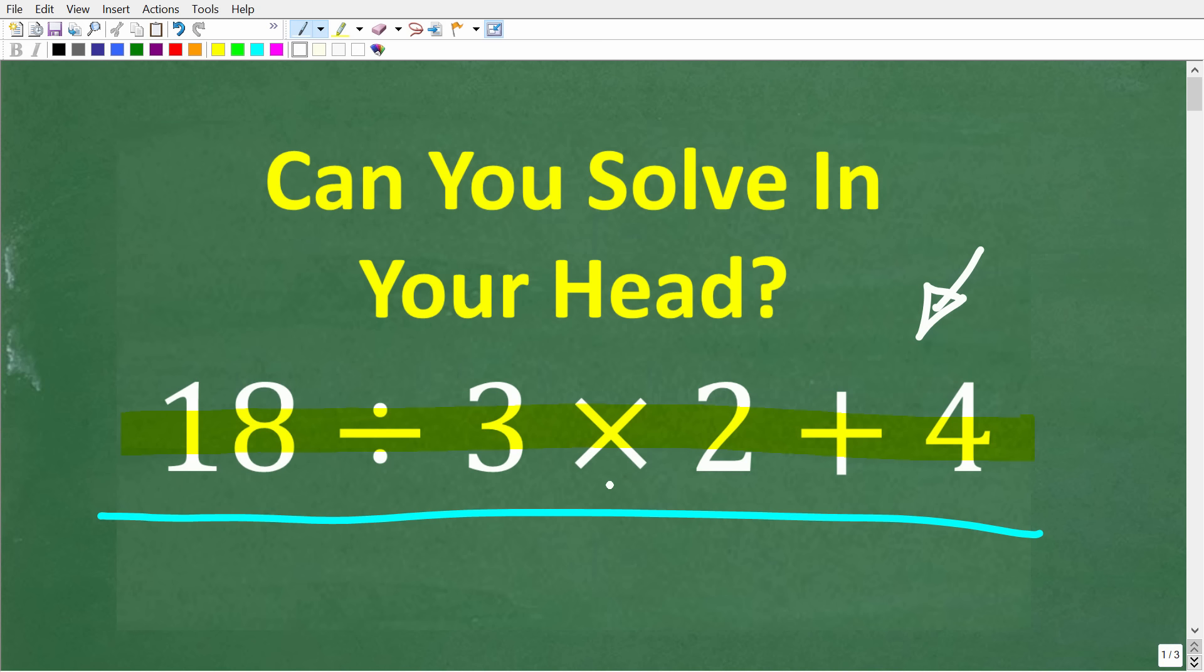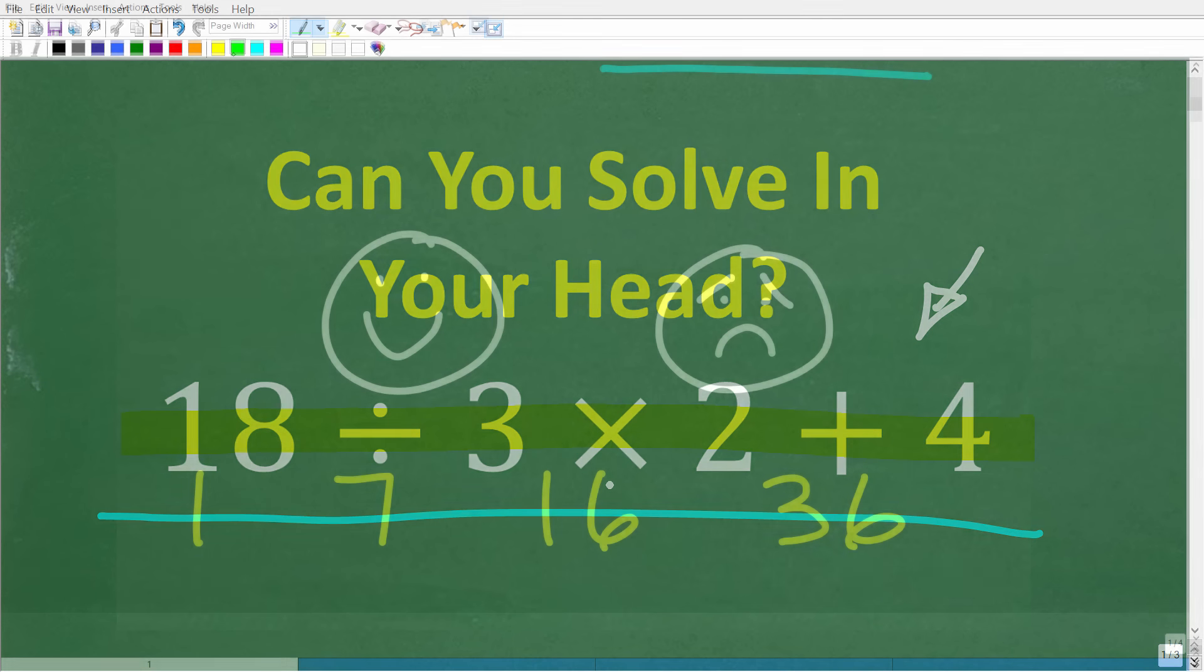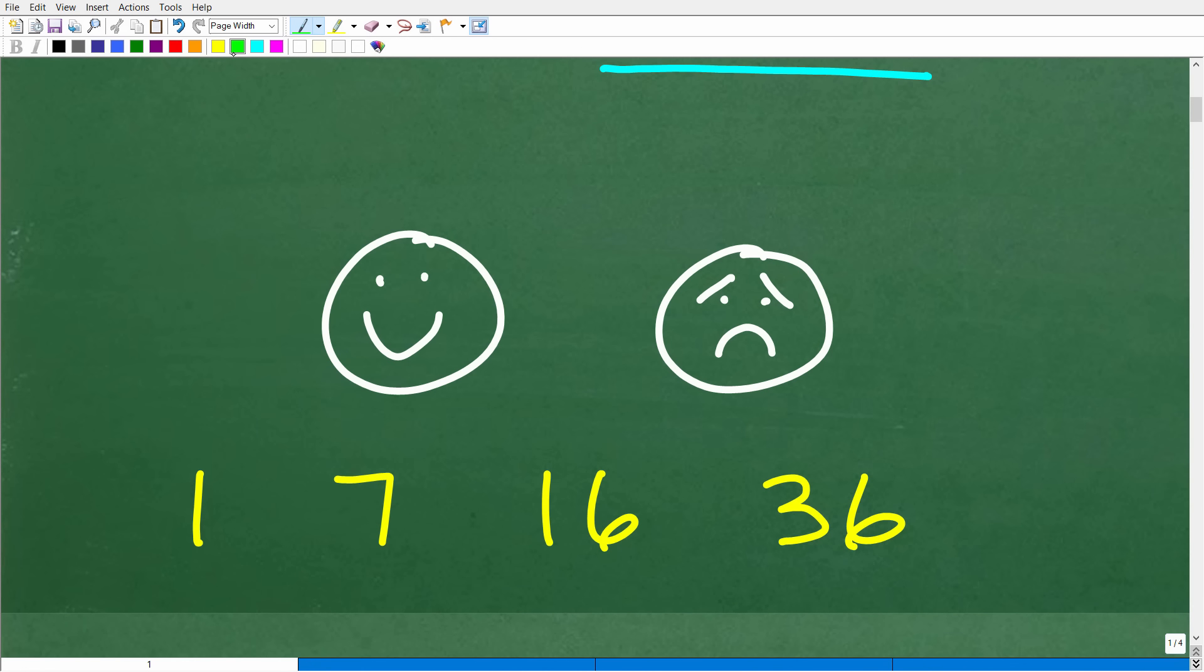Let's go ahead and take a look at the answer right now. The correct answer is one of these numbers right here. Now, if you don't have 1, 7, 16, or 36 as your answer, unfortunately you did this problem wrong. But don't despair. By the time you finish this video, you'll be an expert. But one of these answers is correct. Which one is correct? Is it 1?